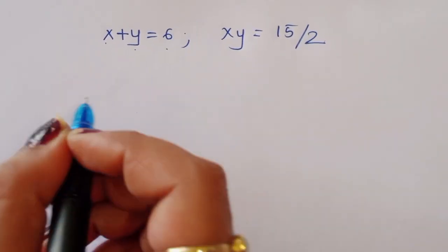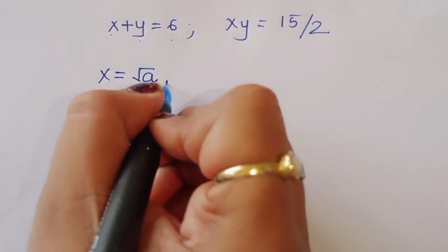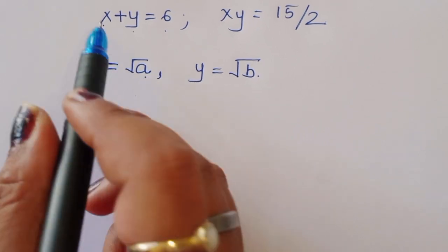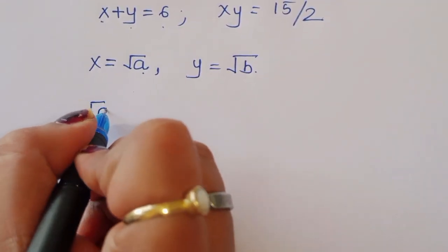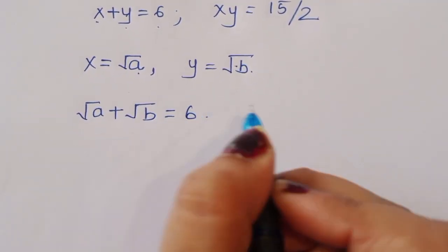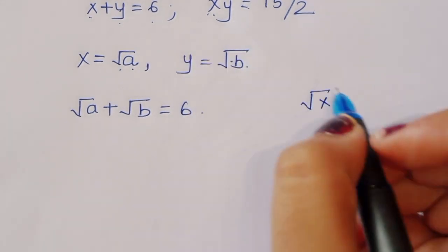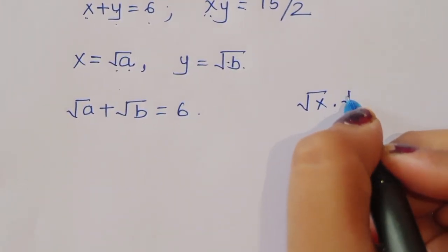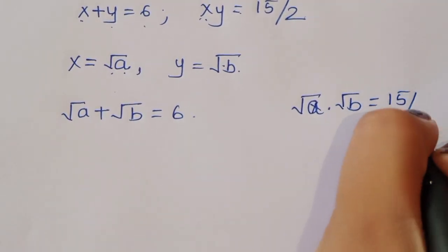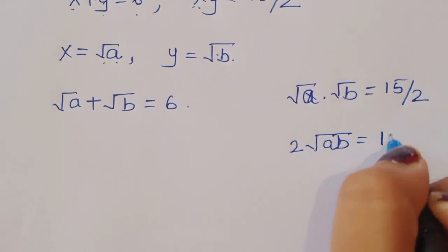Since x = √a and y = √b, we have √a + √b = 6, and xy = √a · √b = √(ab) = 15/2, so 2√(ab) = 15.